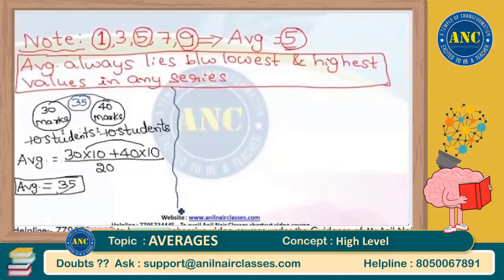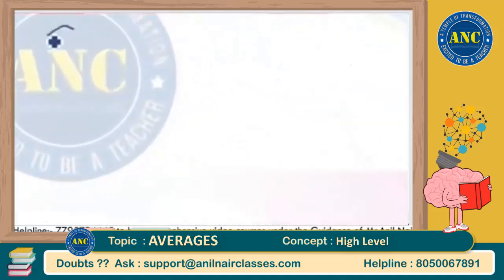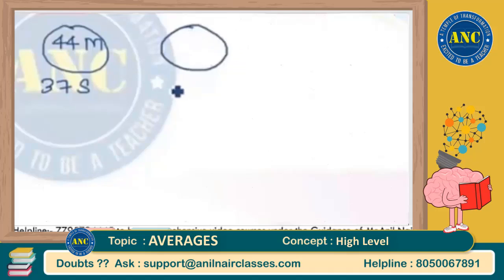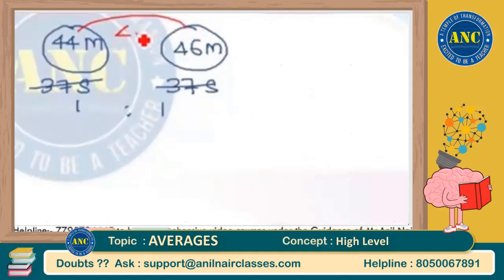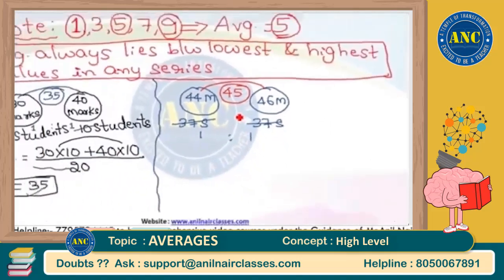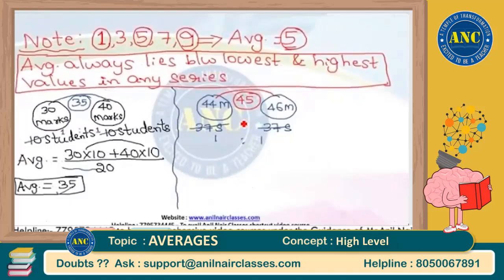One more example: suppose Section A has average marks of 44 with 37 students, and Section B also has 37 students with average marks of 46. Instead of doing all the calculations, since the number of students is in the ratio 1:1 — the same in both classes — I can directly say 44 + 46 divided by 2 equals 90 by 2, which is 45. The middle value of 44 and 46 is 45.